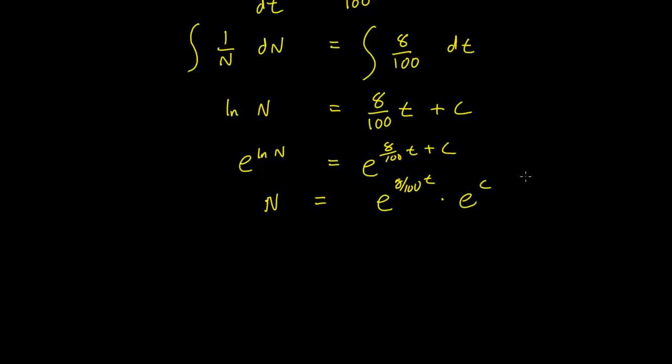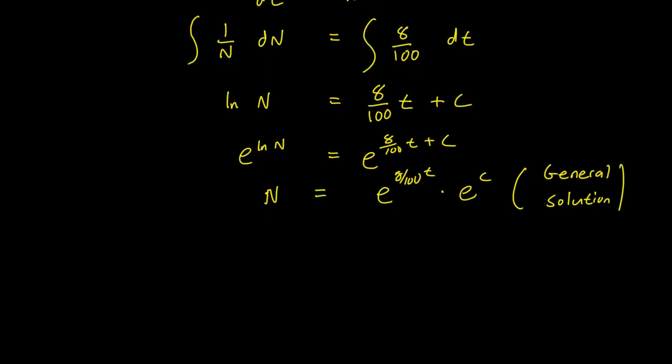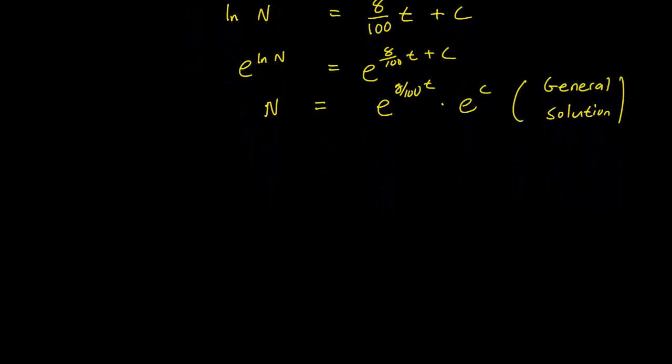This is our general solution. We want to solve for a specific solution this time. To simplify things, write k equals e to the C and change the way our constant is expressed. So this is N equals k e to the 8 over 100 times T.